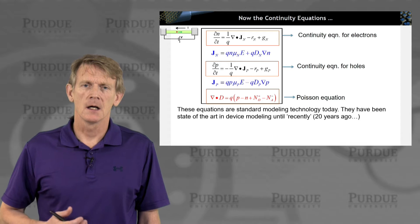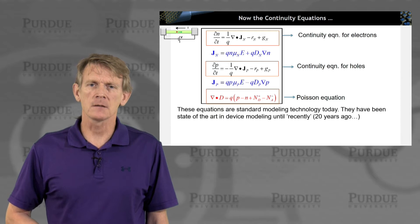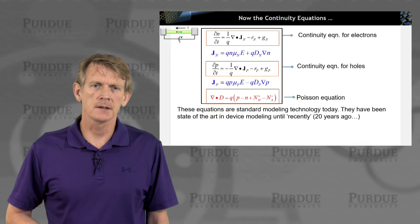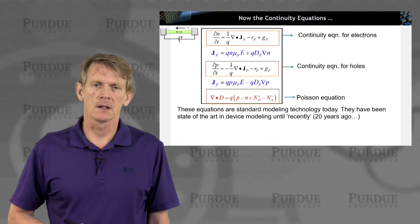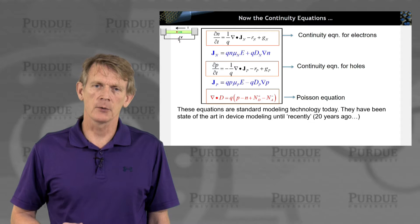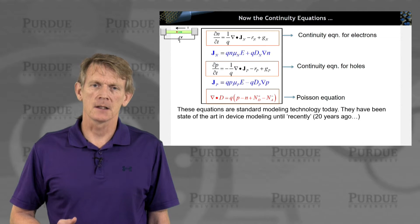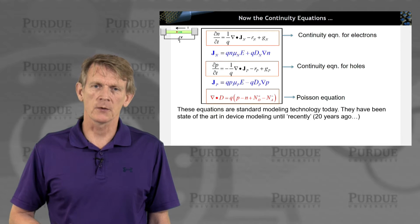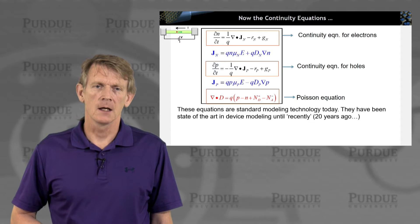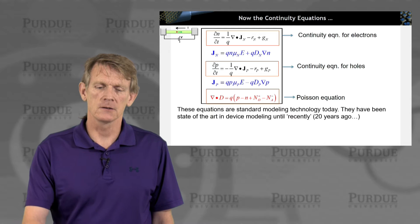Now these equations are the state, the standard modeling technology today. If you go and start modeling these devices that are larger scale, you will be using drift diffusion type models like these. They may be calibrated to some other more modern technology that is now replacing the quantum transport on these nanoscale devices. So these equations were the state of the art 20 years ago and their standard technology today.